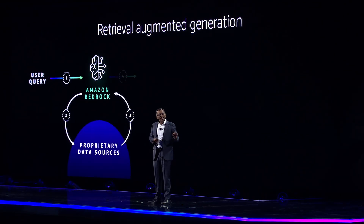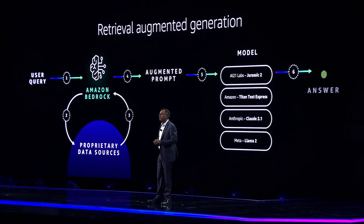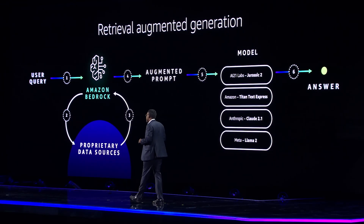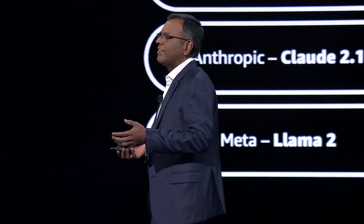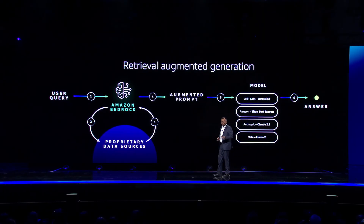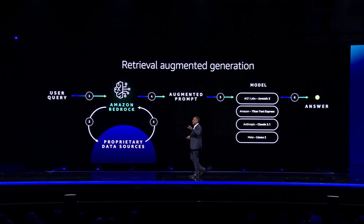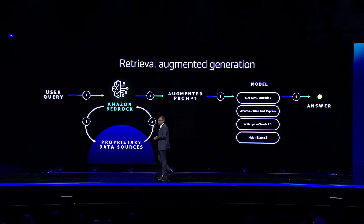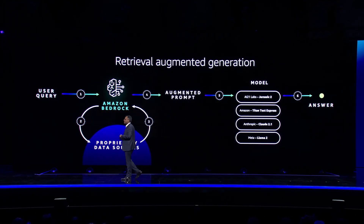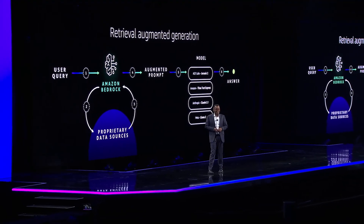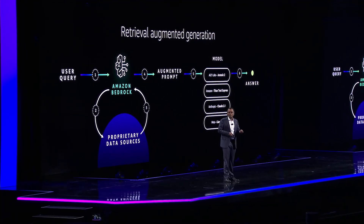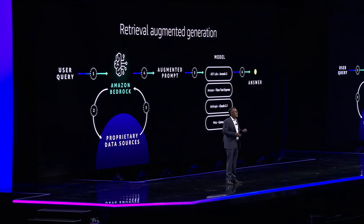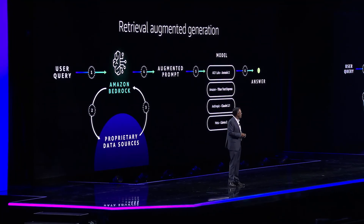That's why, to enable a model with up-to-date information from your data sources, you need a different technique called retrieval augmented generation, also known as RAG. With RAG, you can augment the prompt sent to your foundational model with contextual information, such as product details, which it draws from your private data sources. This added context in the prompt helps the model provide more accurate and relevant responses to the user's query.